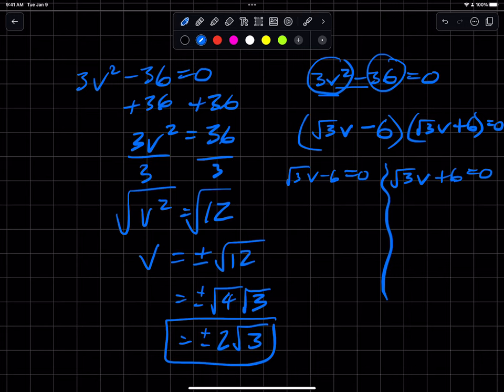And then, adding 6 and dividing by square root of 3, I get v equals 6 over root 3. And over here, I get v equals, I'm going to subtract 6 this time. So, I'm going to get negative 6 over square root 3 because I'm dividing the sides by square root 3.